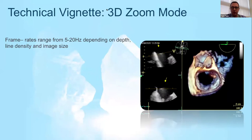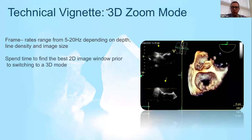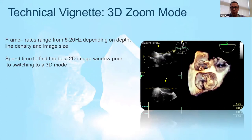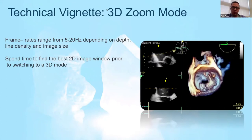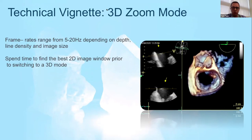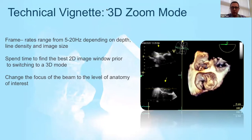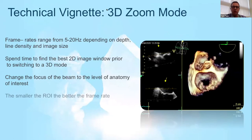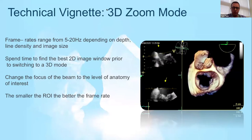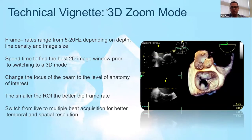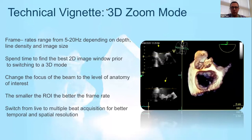To maximize frame rate and temporal resolution in 3D zoom mode, we should focus our assessment on one specific structure. First, we need a really good 2D image — there is no way to get a good 3D picture without a good 2D assessment. After optimizing the 2D image, change the focus to the structure of interest and make the region of interest as small as possible to maximize frame rate. To further improve temporal and spatial resolution, we can switch from live 3D mode to multi-beat acquisition.